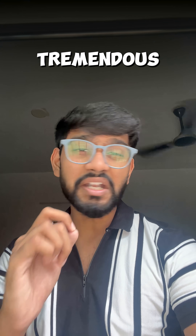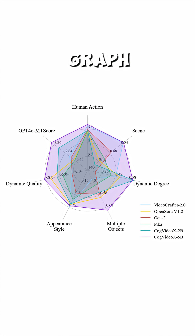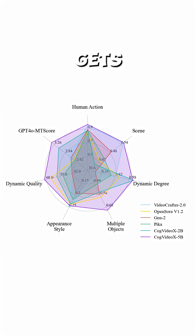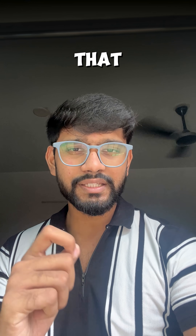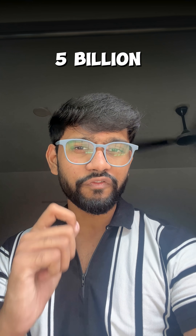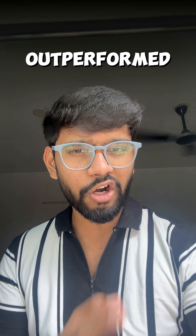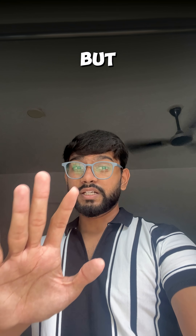By these methods they achieved tremendous results, as shown in this polar graph. In this graph, the center is scored as 0 and gets higher as you move outside. The purple line scores highest in most aspects — that is CogVideoX 5B, meaning it was trained on 5 billion parameters, which also outperformed OpenSora version 1.2.